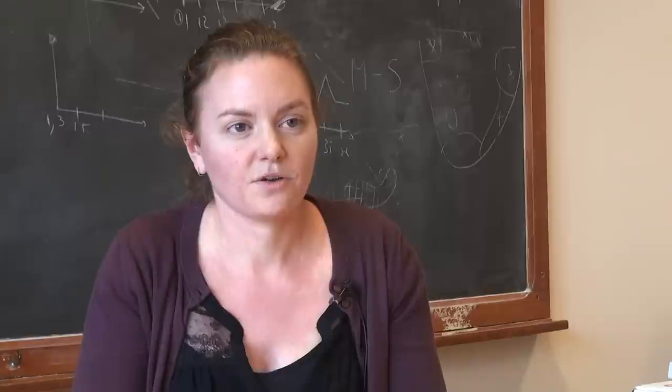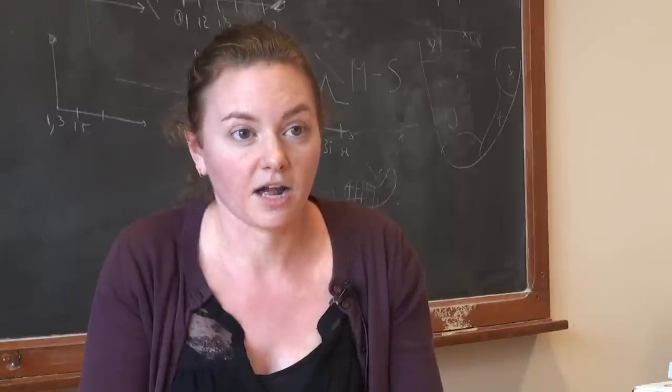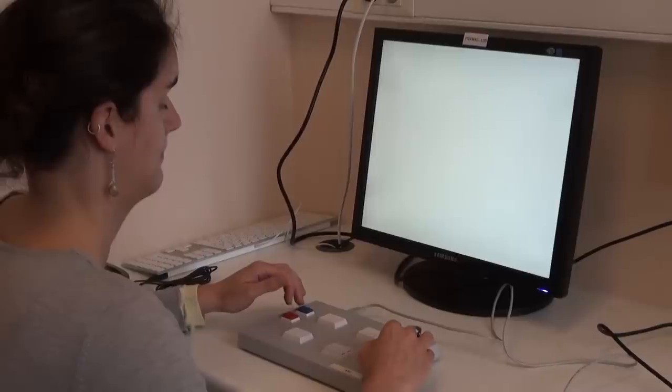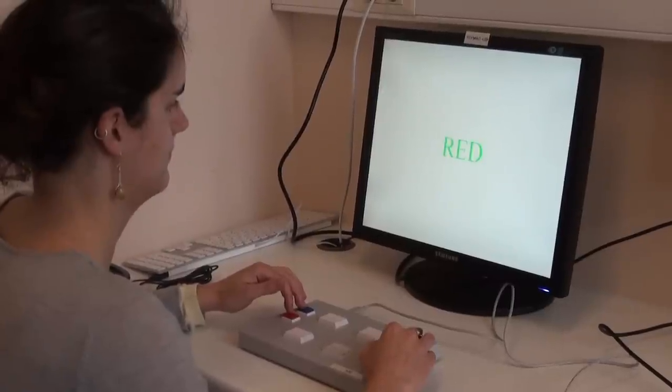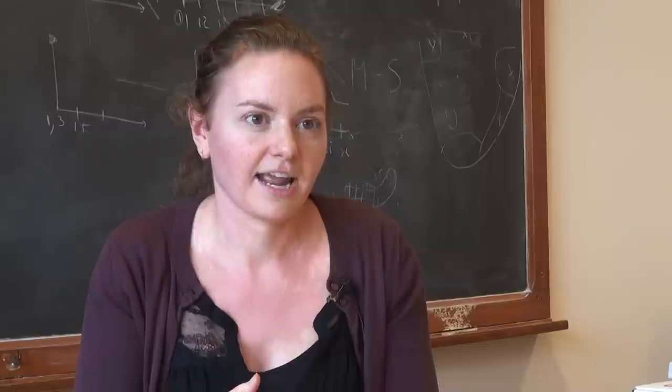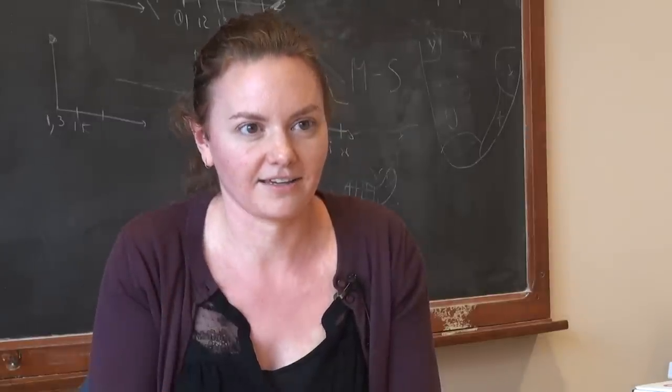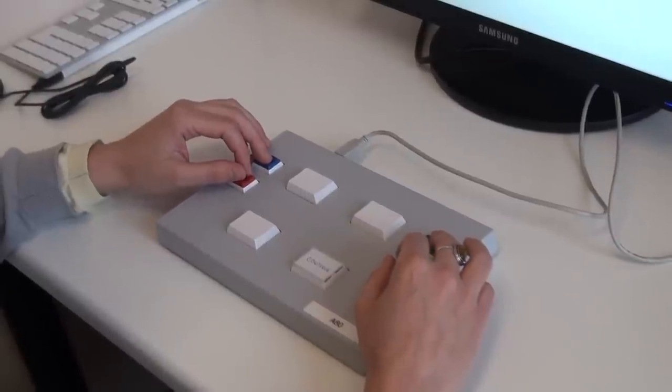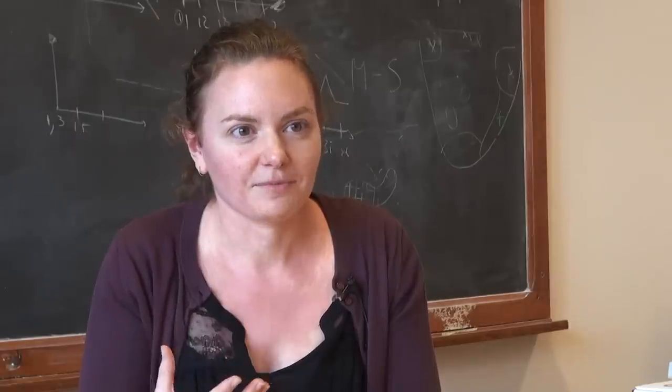It's called the Stroop test. So they see a color word. So if it's in English, they see the word red. But it can be written in red ink or in blue ink or in green ink or in yellow ink. And they actually have to tell me what the color of the ink is, not what the word is.